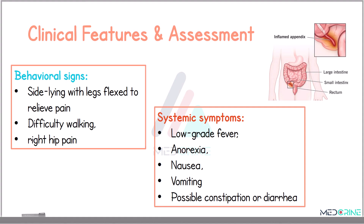In terms of behavioral signs and systemic symptoms, patients often adopt a side-lying position with legs flexed to relieve discomfort. They may have difficulty walking or complain of pain when moving the right hip. Systemic symptoms in acute appendicitis include low-grade fever, anorexia, nausea, vomiting, and possibly constipation or diarrhea.